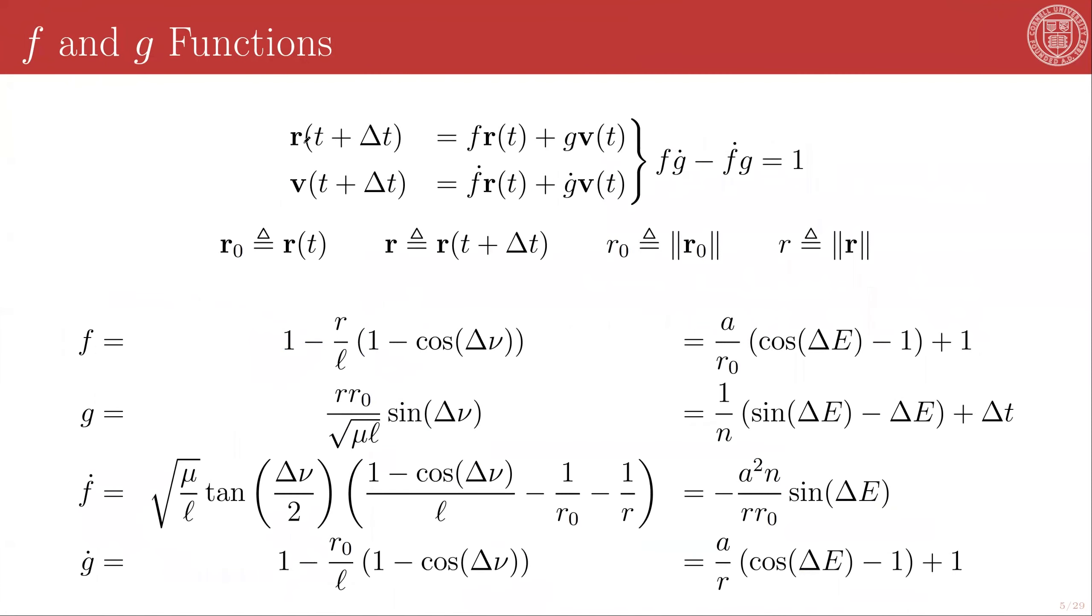So we will posit that R of t plus delta t is given by some function f, which is a function of t and delta t and whatever else we need, times the current orbital radius vector, plus some function g times the current velocity vector. And similarly, that the velocity at a time delta t later is given by the scalar derivative of that same f times the current position vector, plus the scalar derivative of g times that same velocity vector.